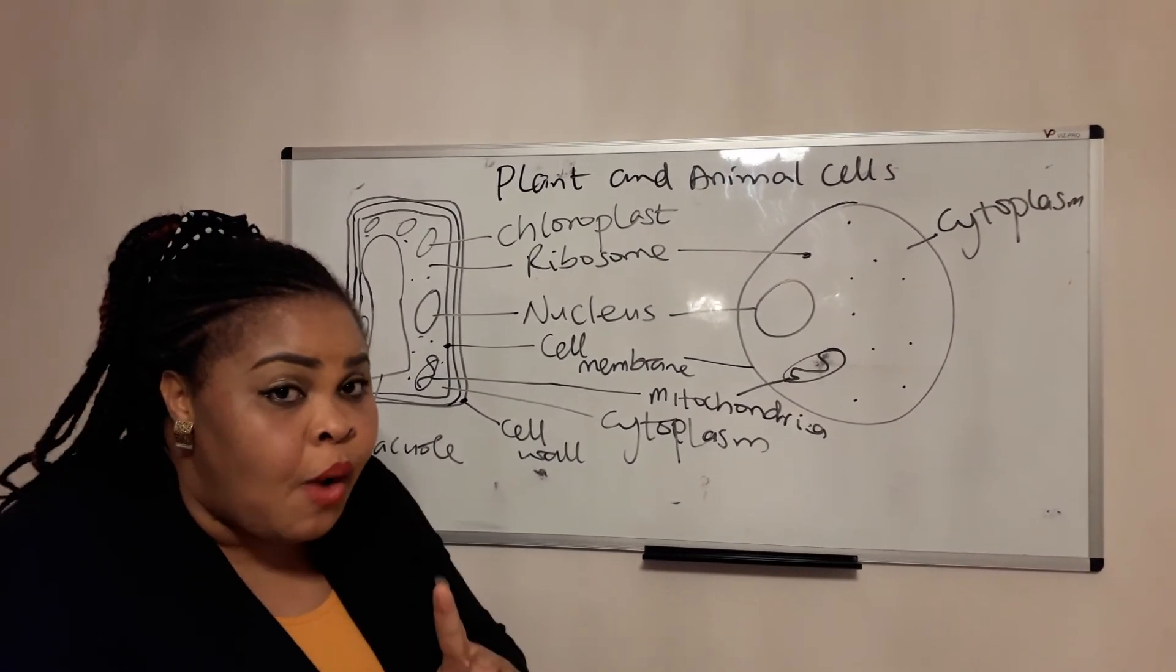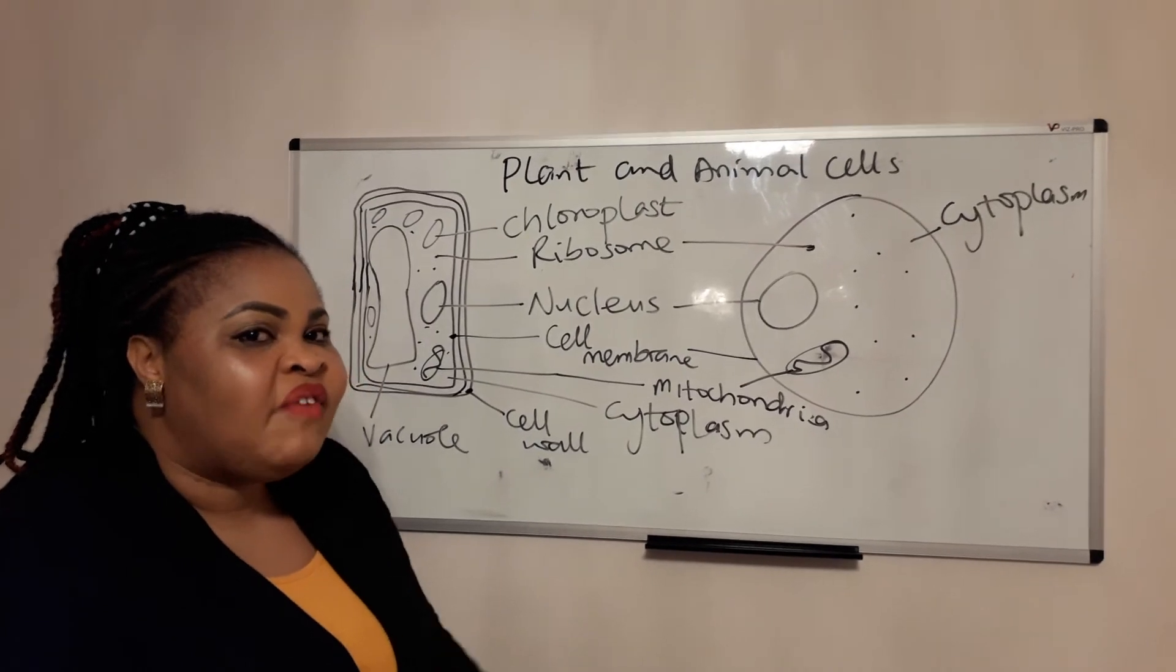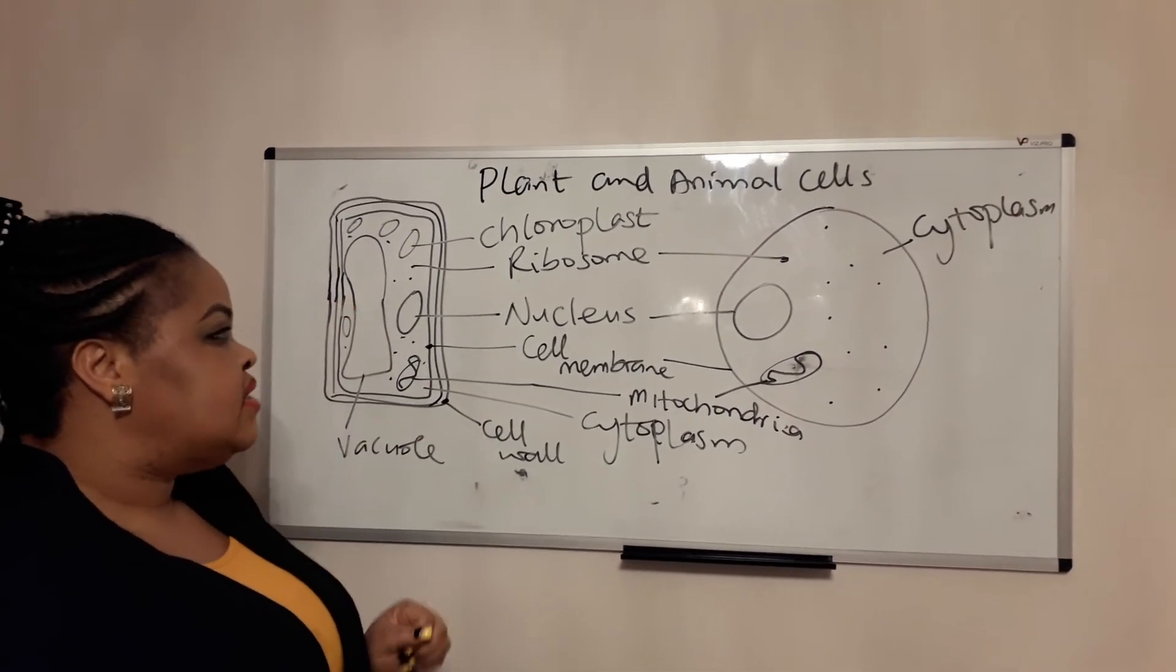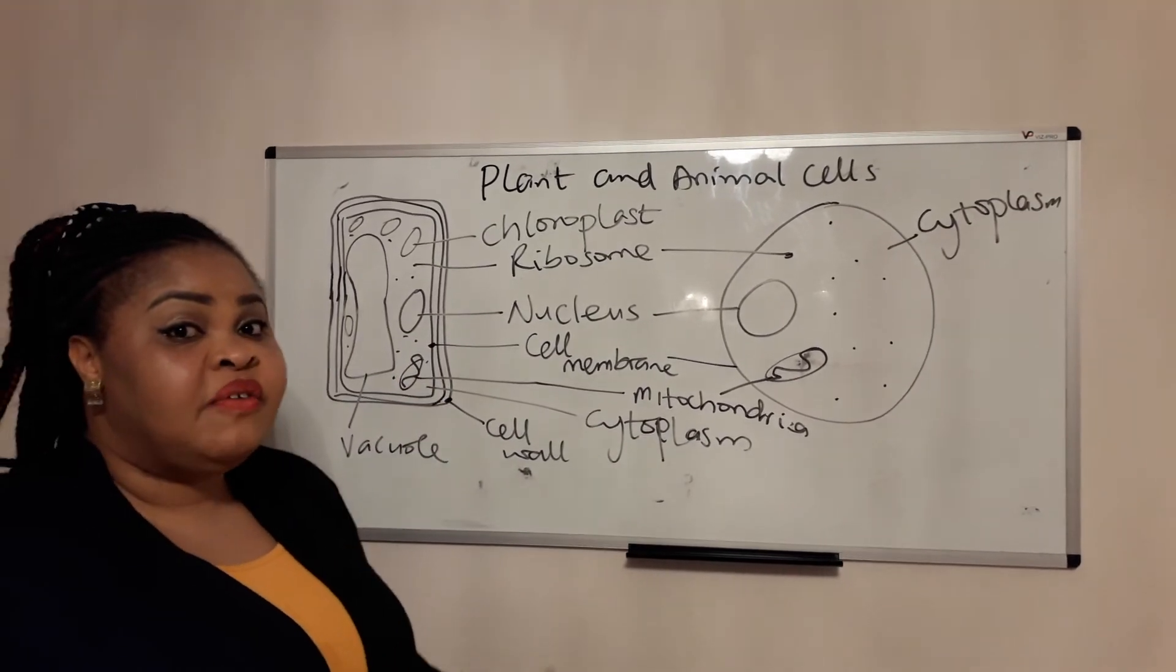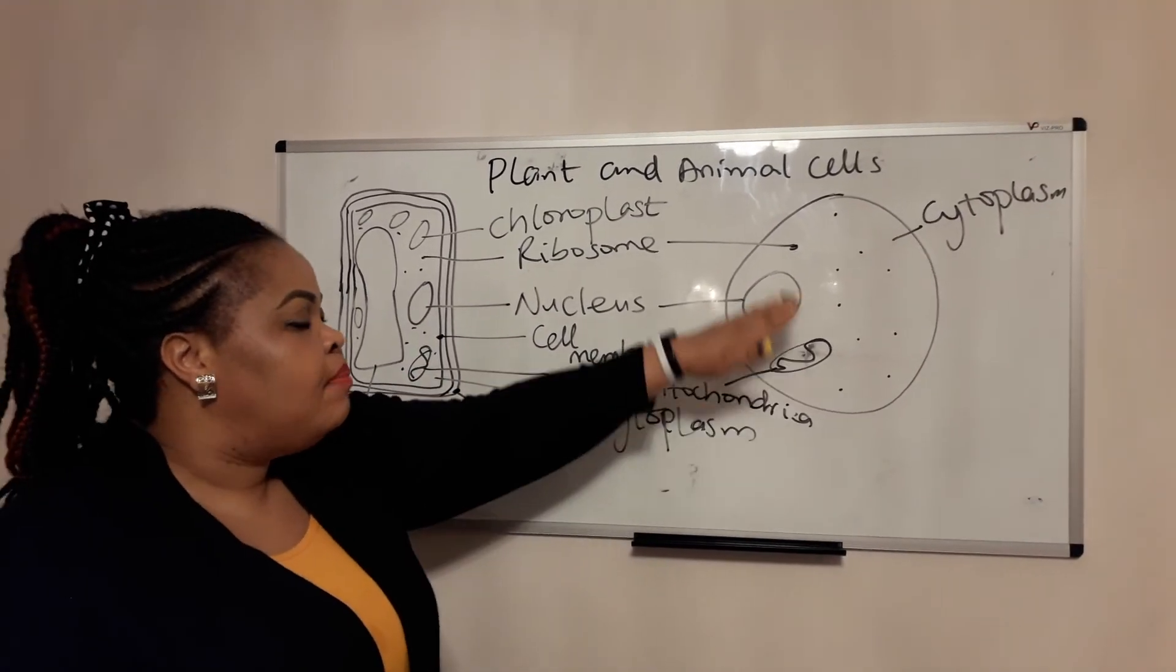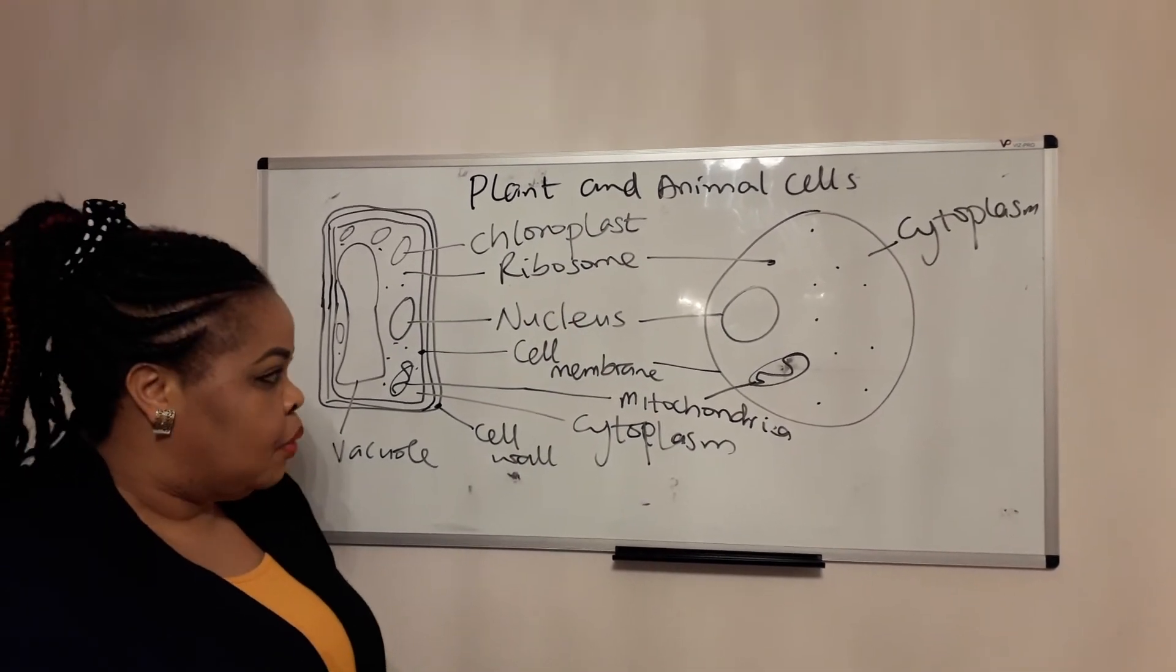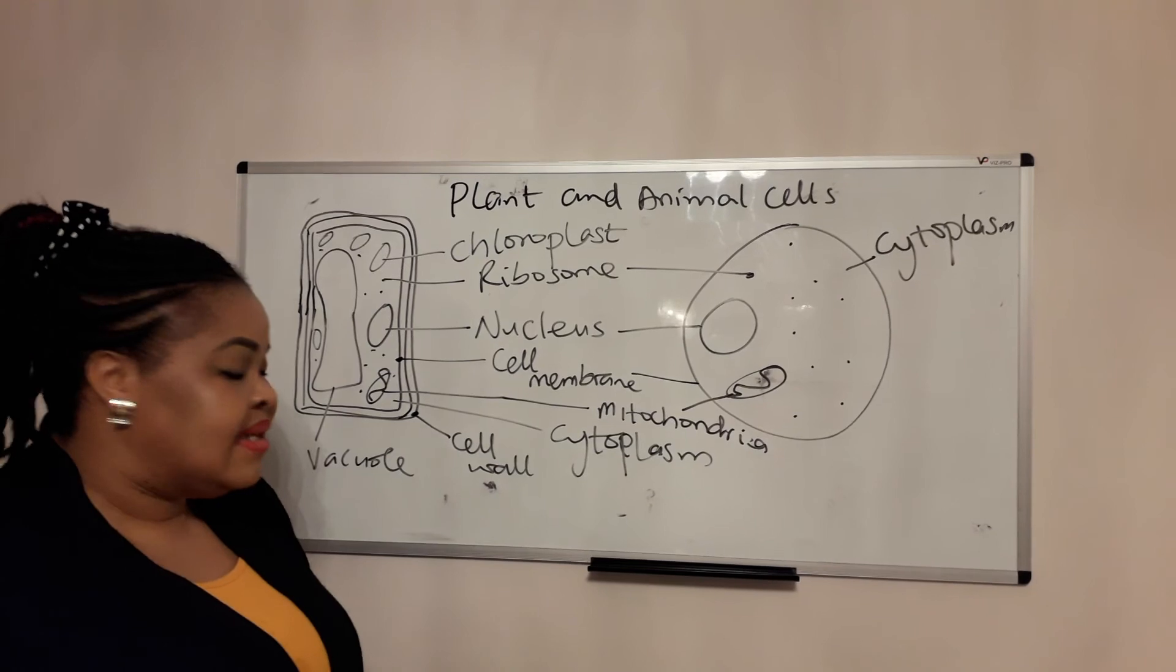And the cell wall contains cellulose, a very strong material which gives strength to the plant cell. That's why plant cells are very strong and upright. And because animal cells do not have cell walls, they are very flexible. And that's why we can move ourselves.